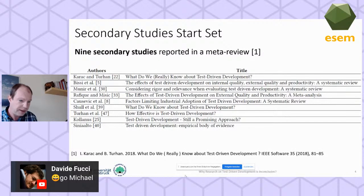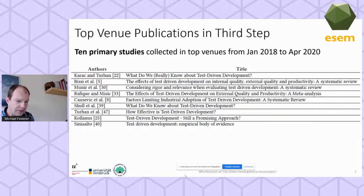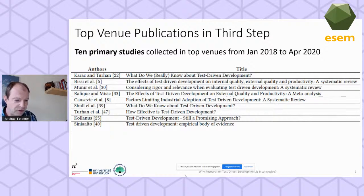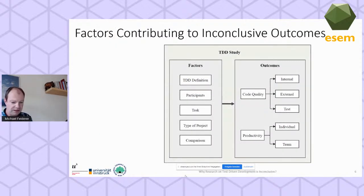These are the nine secondary studies taken from the meta-review, and these are the 10 primary studies collected in top venues from 2018 to April 2020. Interestingly, none of these papers were published in top testing conferences like ICST or ISSTA, but more in journals and process conferences — so there is space in that community to investigate TDD more.